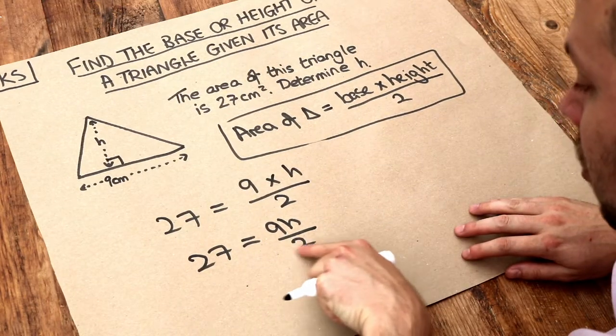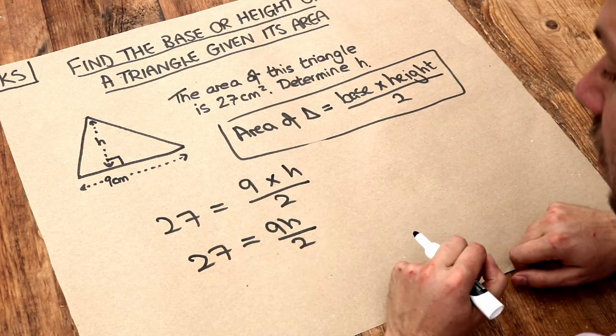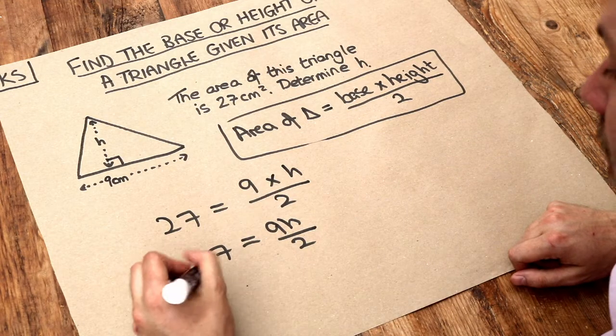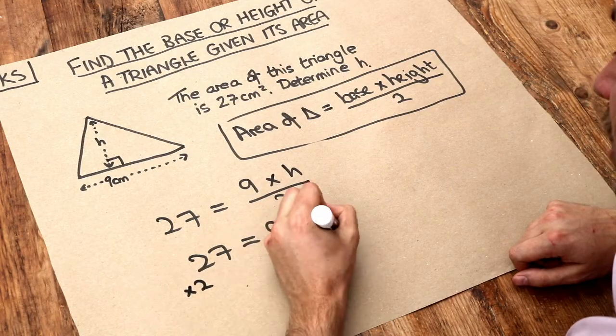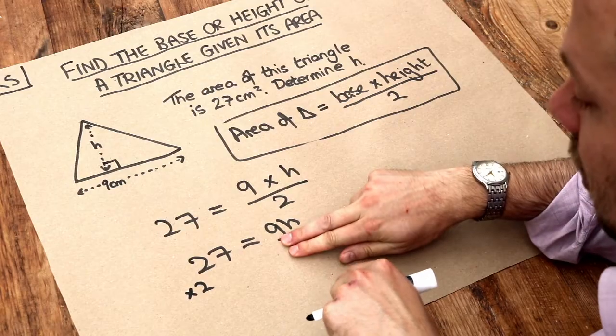So we want to undo, get rid of that over 2. What's the opposite of dividing by 2? Well it's times by 2, so we multiply both sides by 2. That's the opposite of dividing by 2, so it gets rid of that over 2.